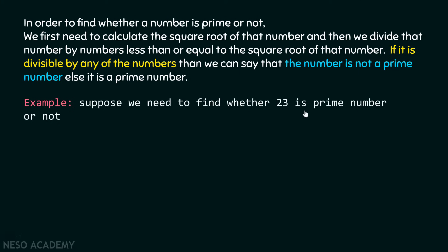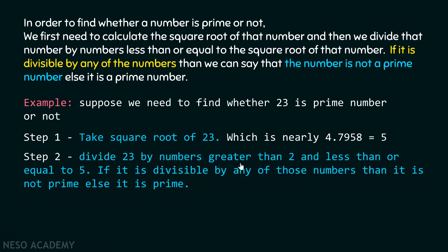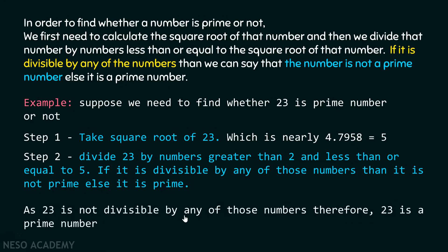For example, suppose we need to find whether 23 is a prime number or not. Step one: take the square root of 23, which is nearly 4.7958. We can take an upper limit of 5. Step two: divide 23 by numbers greater than or equal to 2 and less than or equal to 5. If it is divisible by any of those numbers, then it is not a prime number, else it is a prime number. As 23 is not divisible by any of those numbers, we can clearly say that 23 is a prime number. By using this idea, we can write our code.